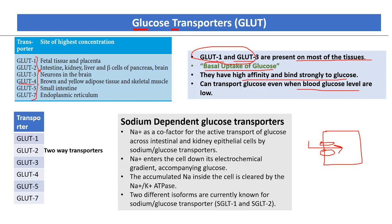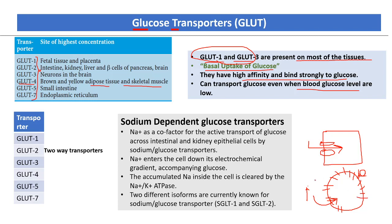GLUT4 transporters are present on adipose tissue and skeletal muscle. They are inducible transporters expressed in response to insulin. For example, when blood glucose levels rise, the beta cells of the pancreas secrete insulin, which binds to skeletal muscle cells and stimulates overproduction of GLUT4 receptors. Through these overproduced GLUT4 receptors, the elevated glucose is taken up into skeletal muscle cells.